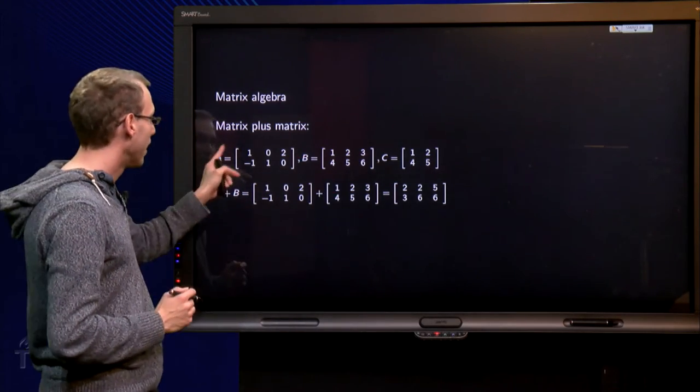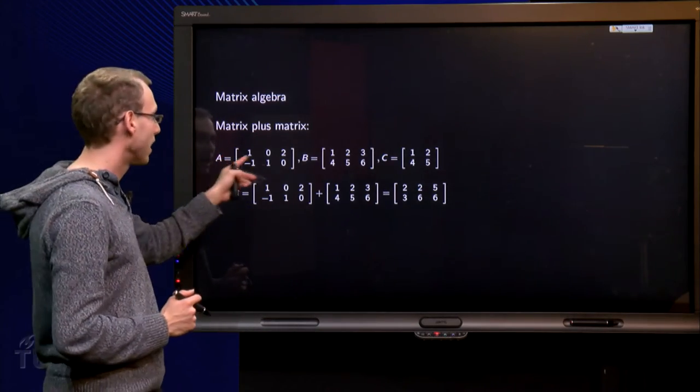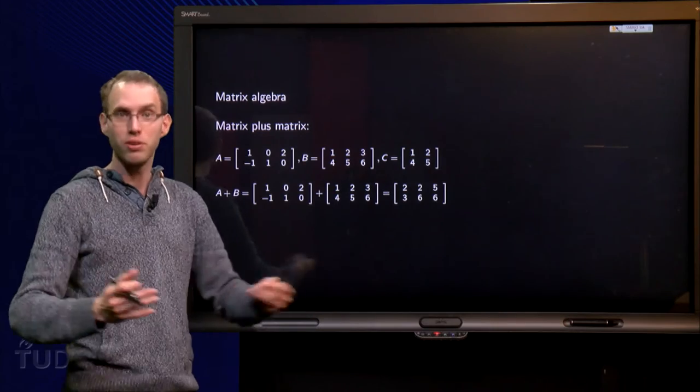The matrices A and B have the same size, so you can add A and B. You cannot add A and C for example, because they have not the same size.